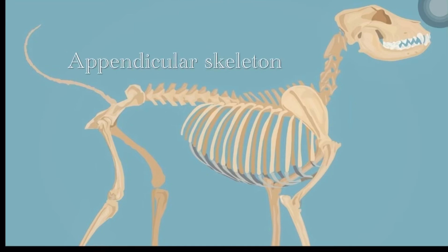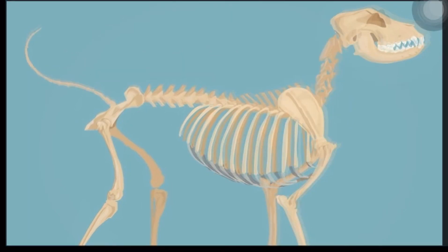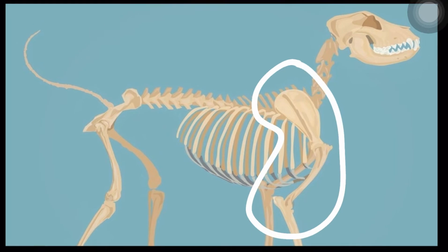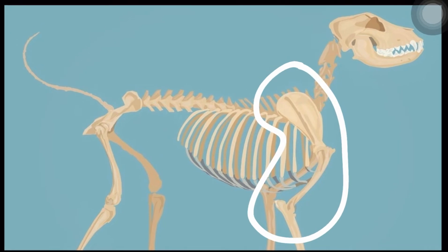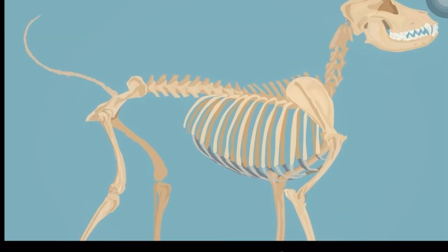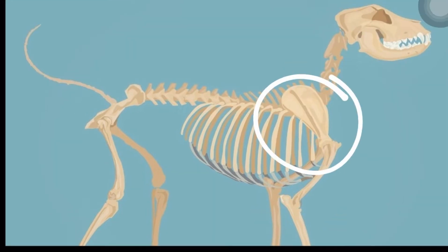The appendicular skeleton is made up of the bones of the limbs. The thoracic limb, also called the anterior limb or forelimb, has no bony connection to the trunk and is only attached by the muscles. In contrast, the pelvic limb is connected by bony articulation via the pelvic girdle.